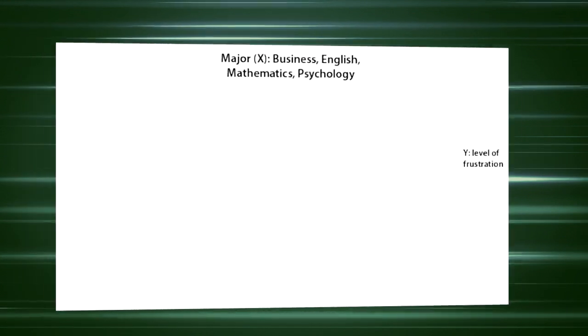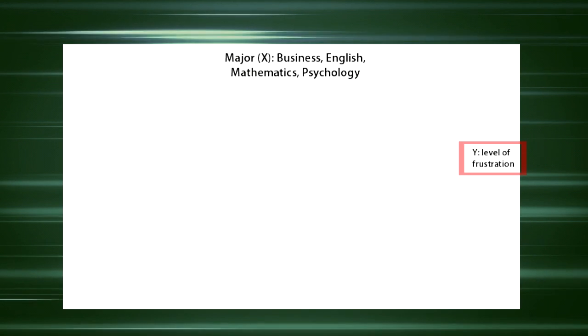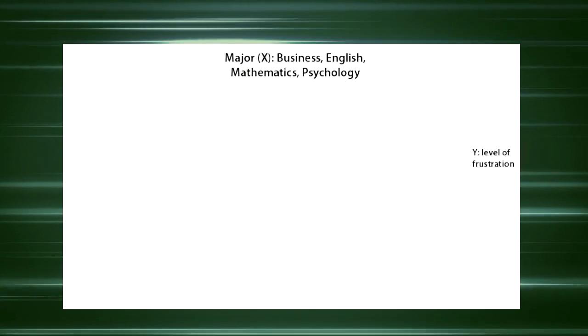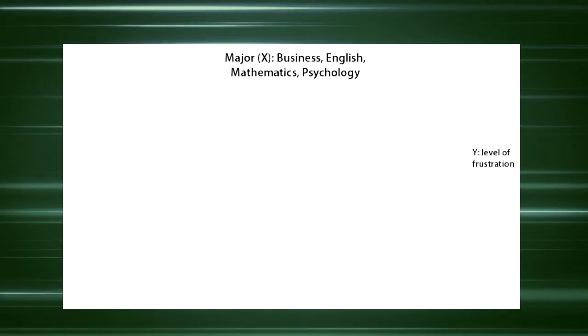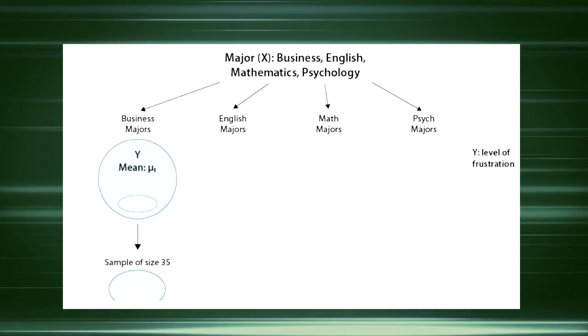This figure highlights that we'll be examining the relationship between major, our explanatory or x variable, and frustration level, our response or y variable, to compare the different means of frustration levels among the four majors defined by x.